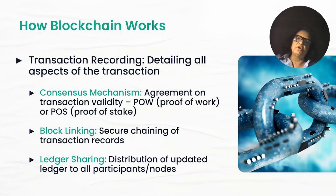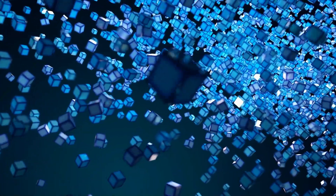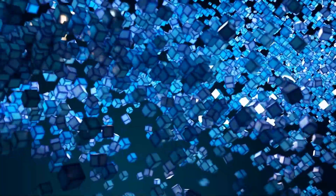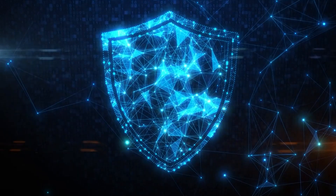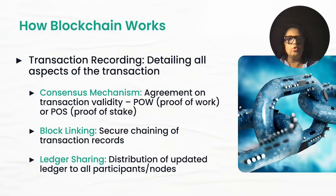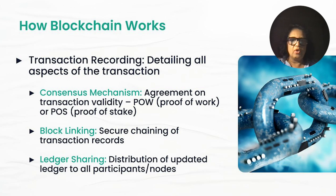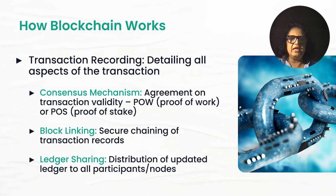How does the blockchain actually store the data? Essentially, all the nodes have to be in agreement that they are ready to store the data. There are two mechanisms used: proof of work, which is used in Bitcoin, where each node has to solve a complicated equation; and proof of stake, a newer method used by protocols such as Ethereum, Solana, and others. Once agreement is reached, the data is stamped across all nodes at once, and all records are chained together.